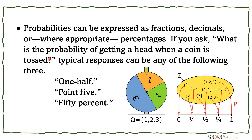Probabilities can be expressed as fractions, decimals, or where appropriate, percentages. Whenever you are asked what is the probability of getting a head when a coin is tossed, typical responses can be any of these three forms.